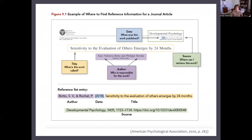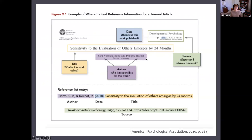If you were to download a PDF of your source, it might look something like this. How do you find all of that information? The source is the American Psychological Association. The date is found right here. Then you have a title — 'Sensitivity to the evaluation of others emerges by 24 months.' Then you have the authors — two authors: Sarah Valencia Boto and Philippe Rochat. They are the authors.